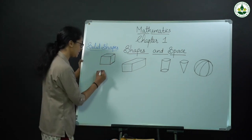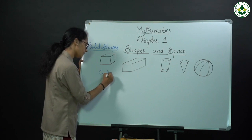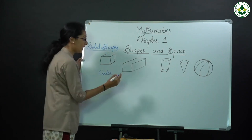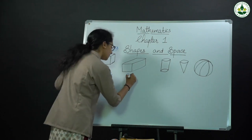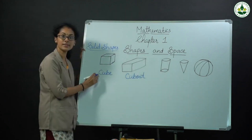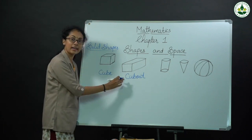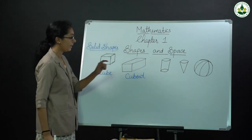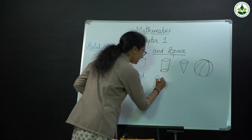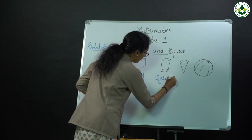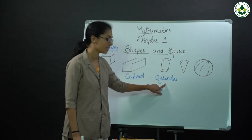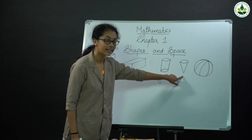The first one is cube. Then the second one is — what is this shape? Cuboid. First shape is cube, then second one is cuboid. Then which shape is this one? This one is cylinder.